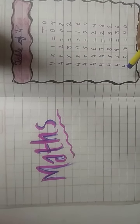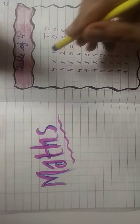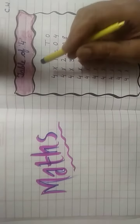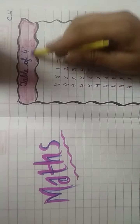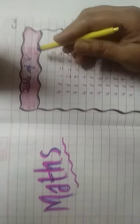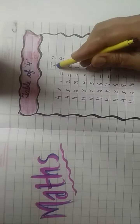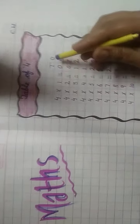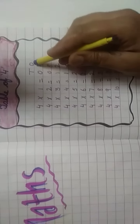Good morning students. Let us start with the table of four. T means tens, O means ones.